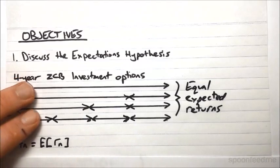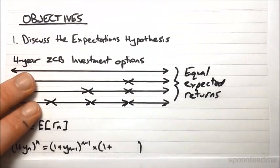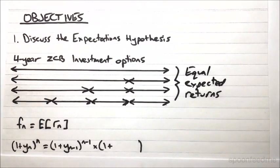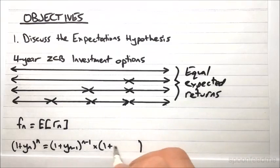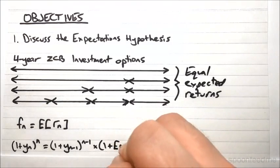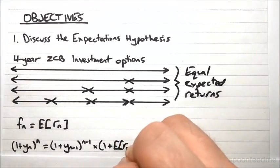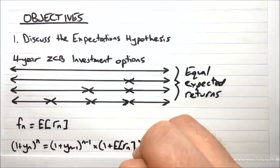So remember that our forward rate was defined as the rate that satisfies this equation, where we put Fn in here. And we're just going to fill in this, since we know that under the expectations hypothesis.